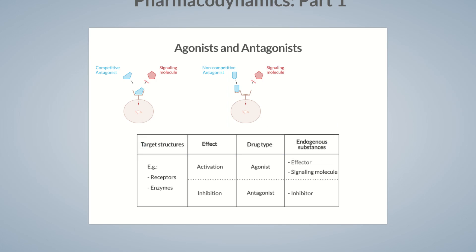Let's go back to drugs that directly affect signal transduction at the receptor. This process isn't only regulated by competitive and noncompetitive antagonists, but also by partial agonists. These drugs bind directly to the receptor, where they generate a signal that is similar yet weaker than the endogenous signal. As a result, drug binding to the receptor leads to an overall weaker signal.